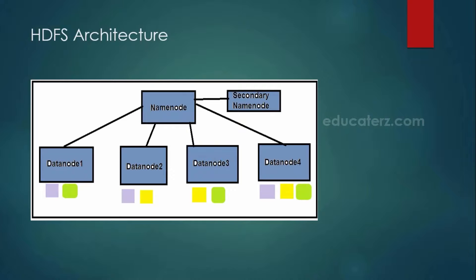If you see the architecture of your Hadoop distributed file system, it's a master-slave architecture. That means your master is your name node, and the slave machines we call them as data nodes. Apart from this, we are also having something called a secondary name node, or checkpoint name node. We will be seeing in detail about the purpose of this secondary name node and the need of your data nodes and name nodes.